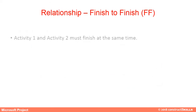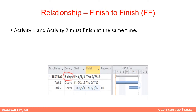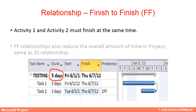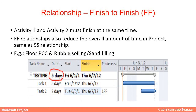Finish to Finish: Activity 1 and Activity 2 must finish at the same time. These relationships also reduce the overall amount of time in the project. An example is the relationship between floor PCC and rubble soiling.